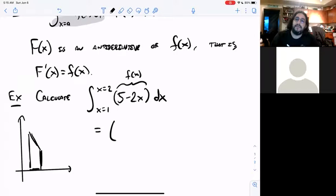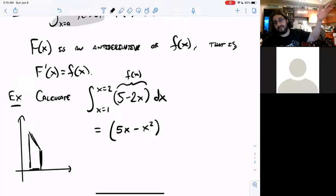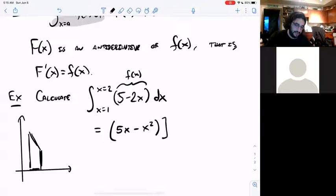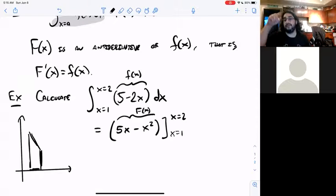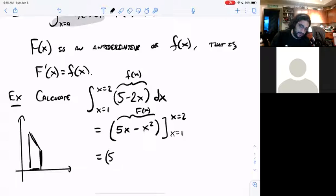How would I get 5 by taking a derivative? Oh, I would need 5x. How would I get negative 2x by taking a derivative? I would need negative x squared, right? The derivative of negative x squared would be negative 2x. Then I just plug in my bounds. See, here now I have my big F. That's big F, right? It's the function whose derivative equals little f. Now just plug in the bounds and subtract, and you're done.